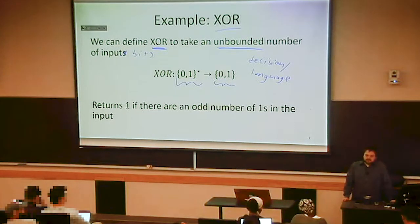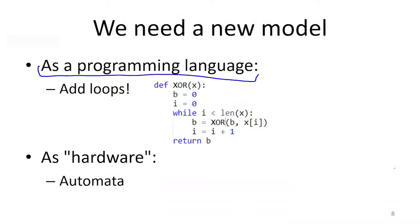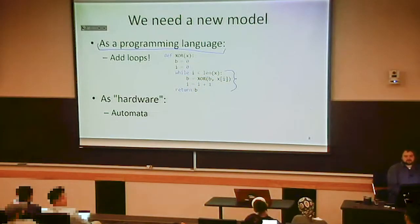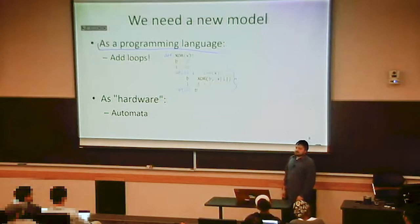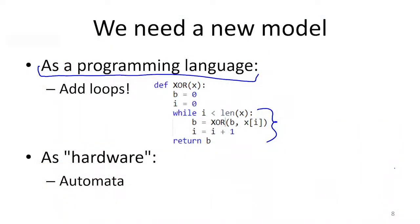What we'd like is a model where any number of input bits you hand to it, that same implementation gives the right answer for all of them. Programming languages allow us to do this — you write one program and it works no matter how big the input is. You could write a program that takes a string or a list and computes some function for any list of any length. The way programming languages manage this is by adding loops, and loops are the things that allow you to compute infinite functions.